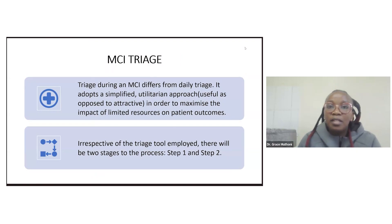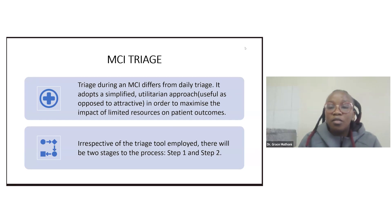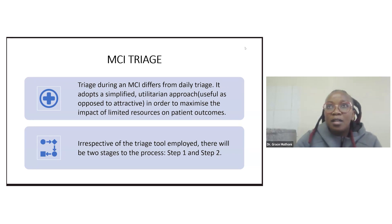In an MCI triage, the aim differs from daily triage where you want to do the best for all patients. For MCI, your aim is to do the greatest good for the greatest number. MCI triage adopts a simplified utilitarian approach — one that is more useful as opposed to attractive — in order to maximize the impact of limited resources on patient outcomes.